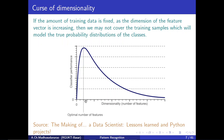Beyond d=20, the dimension exceeds what 20,000 samples can support, so we can no longer estimate the distributions well. Even applying the MAP rule or Bayes classifier at that point will not yield good results. This is the fundamental problem we face — it is due to a lack of sufficient training data relative to the dimensionality.